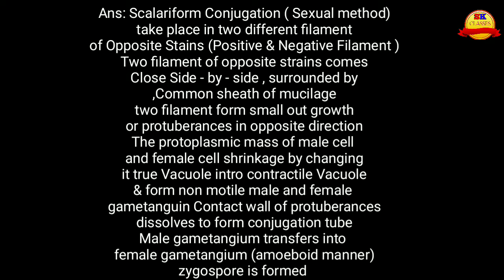The two filaments form a small outgrowth or protuberance in opposite directions. The protoplasmic mass of the male cell and female cell shrink by changing their true vacuole into the contractile vacuole, and form a non-motile male and female gametangium. The contact wall of the protuberance dissolves to form a conjugation tube.